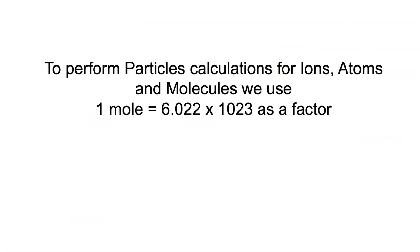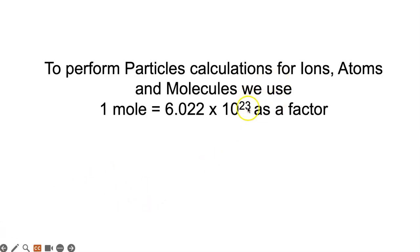To perform particle calculations for ions, atoms, and molecules, remember we use 1 mole = 6.022 × 10²³ as a conversion factor. There was a small typo earlier — it is 6.022 × 10²³, now corrected. Please practice by doing the problems in the worksheet and the exit ticket. Thank you, and I'll see you in the next video.